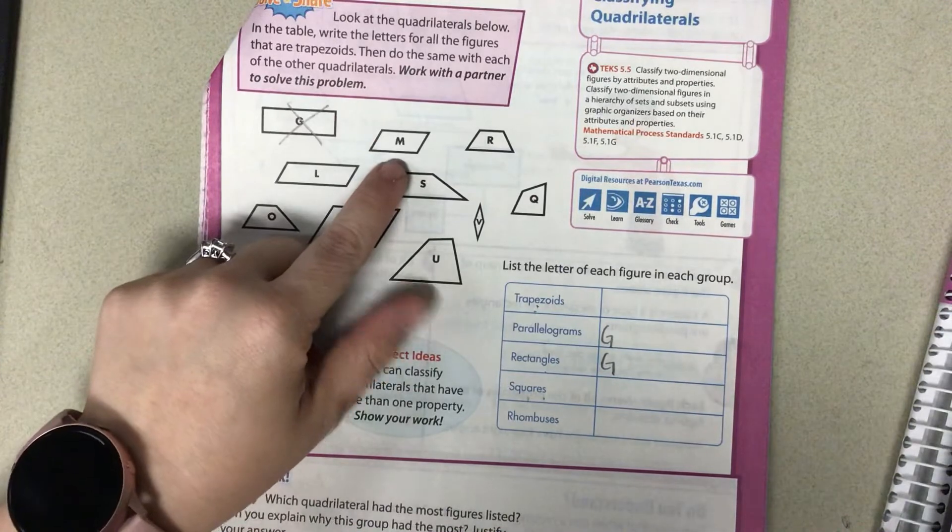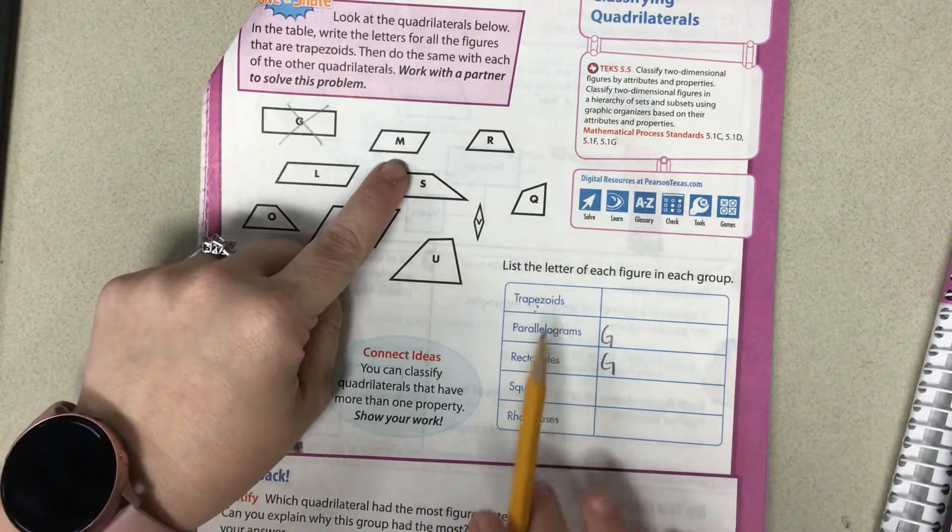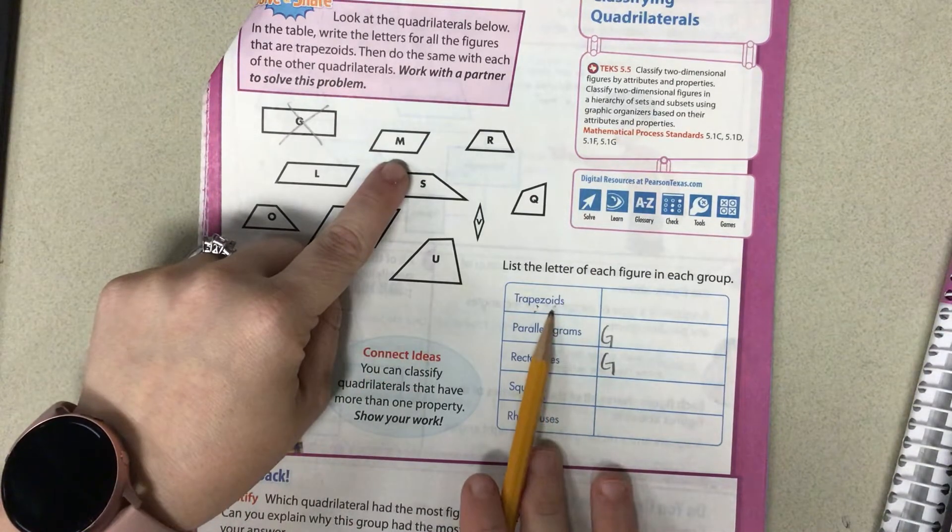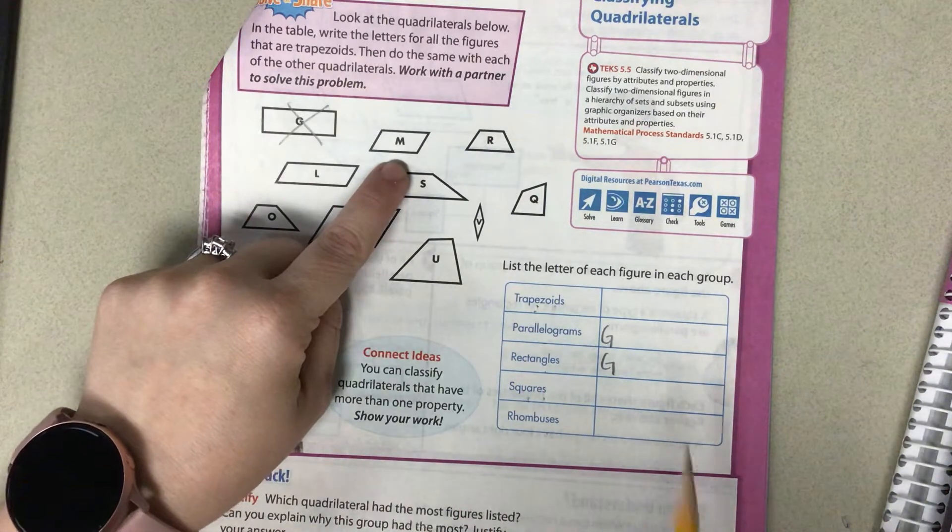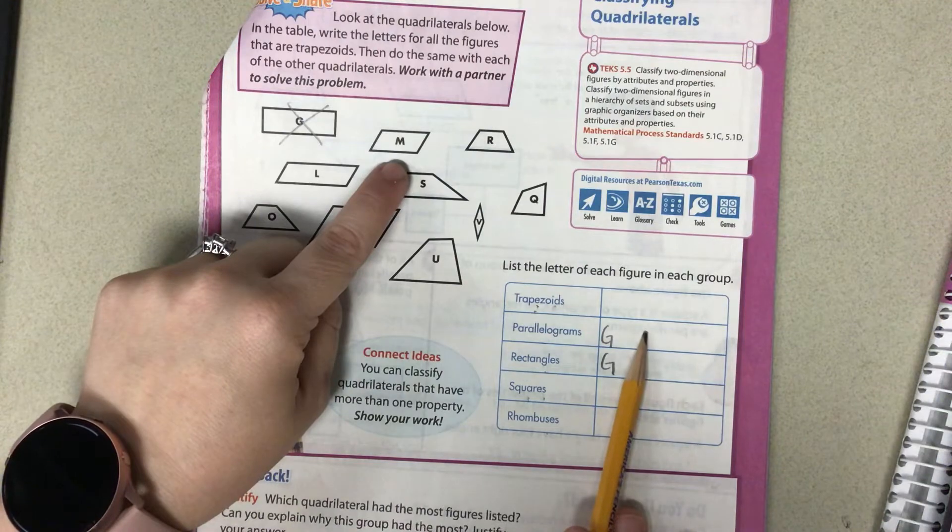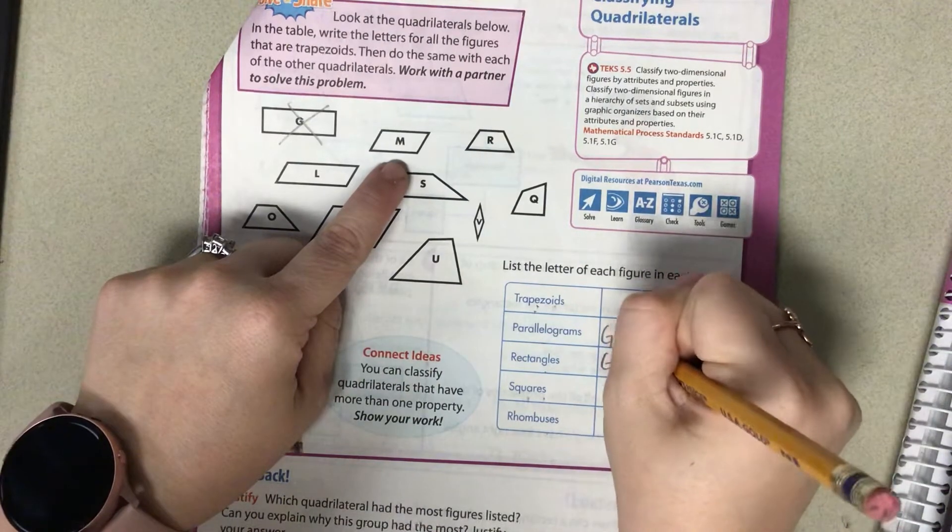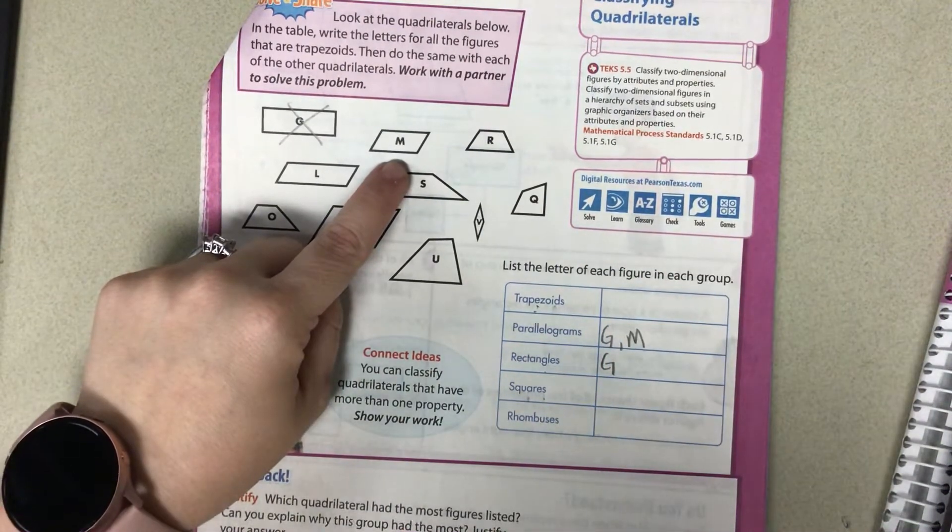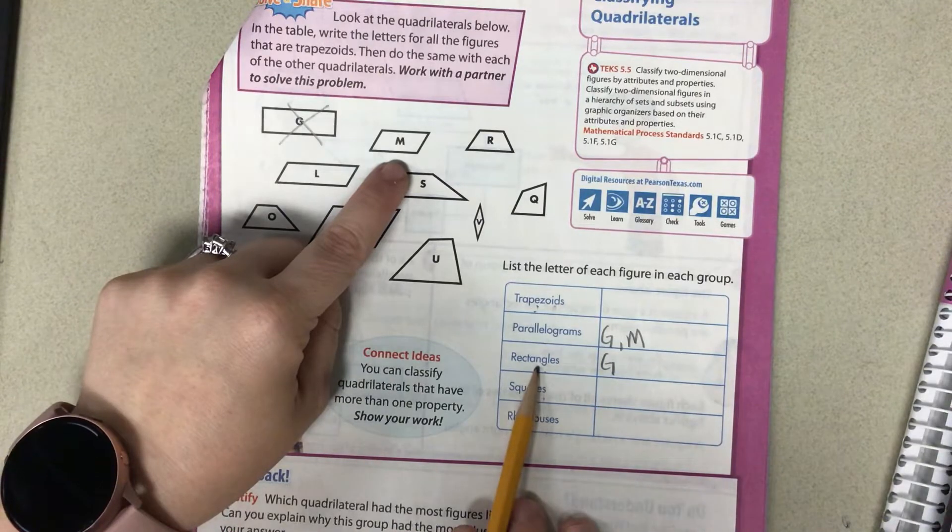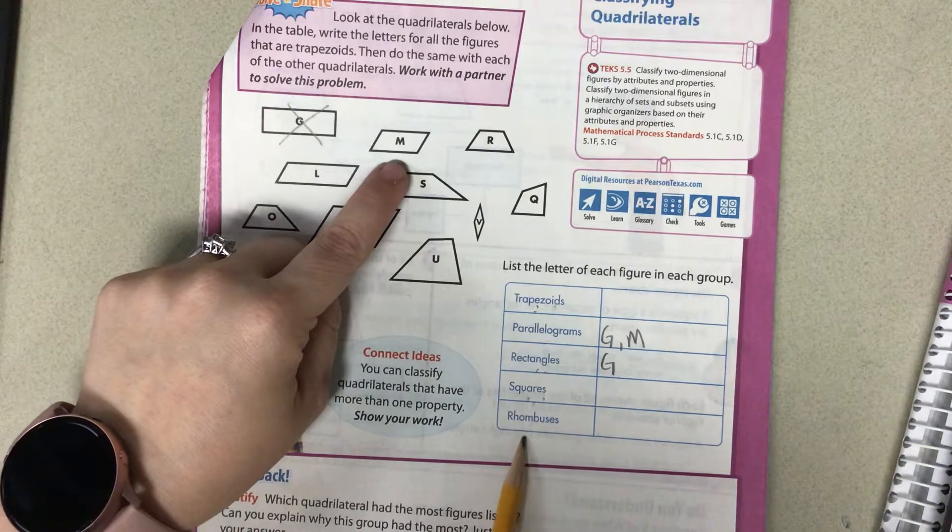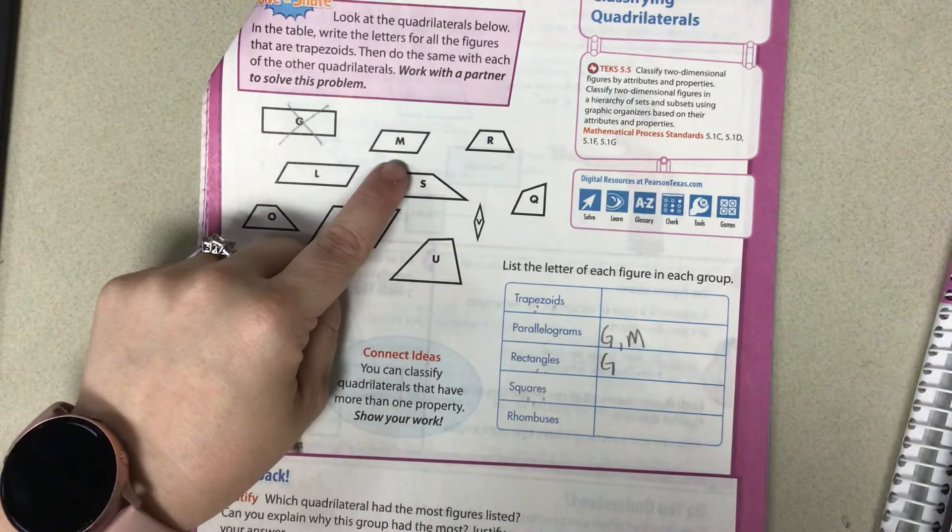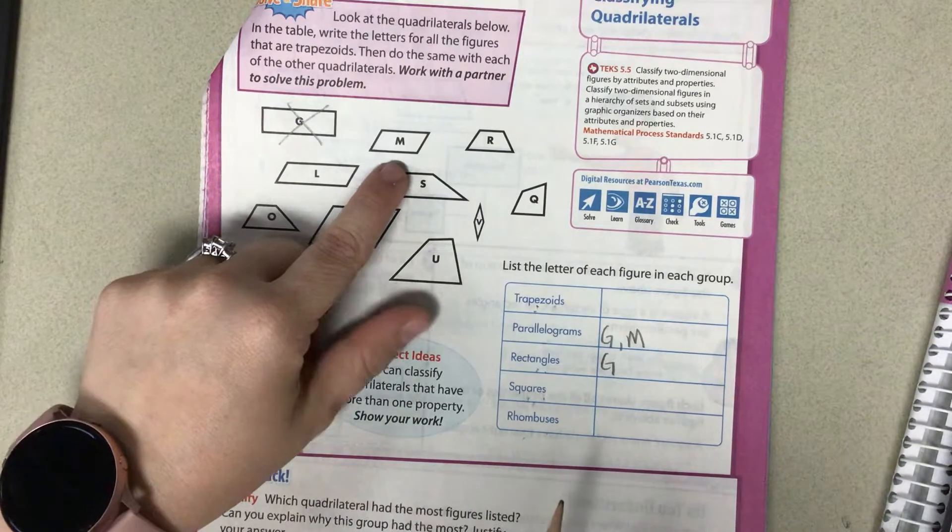Let's go to M. Is it a trapezoid? No. Is it a parallelogram? Yes, all sides are the same. Is it a rectangle? No, no four right angles. Square? No, no four right angles. Rhombus? No, all sides are not the same. All right, so let's keep going.